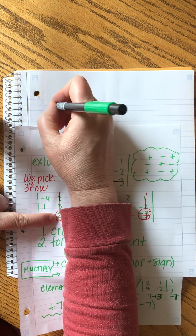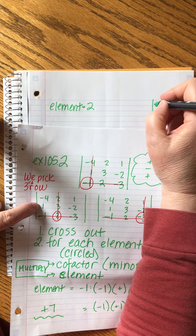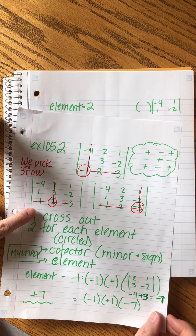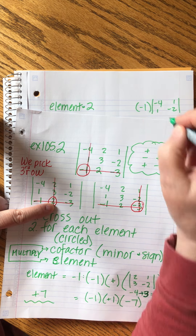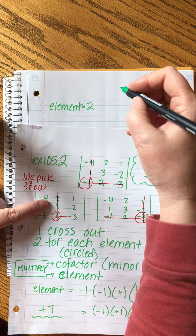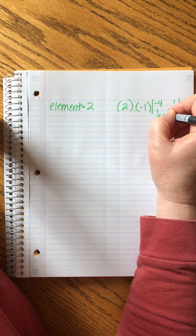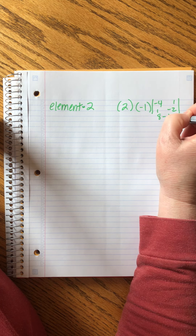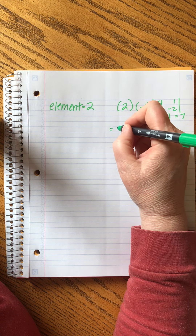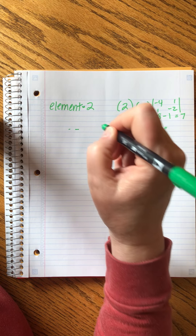For the element of two: solving the 2x2 minor gives positive 8 minus 1 times 1 equals 1, so that equals 7. We multiply that by negative one and positive two — so this second piece equals negative 14. Then the third element, minus three: the minor is minus 4, 1, 2, 3. The sign at the bottom corner is positive, so plus one. The element itself is minus three.